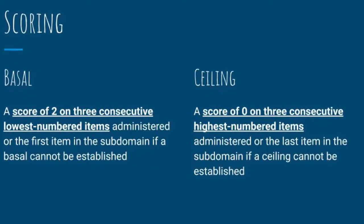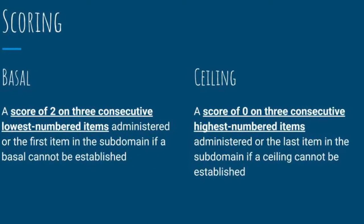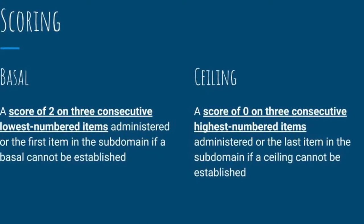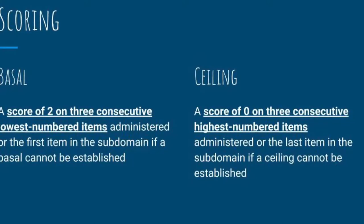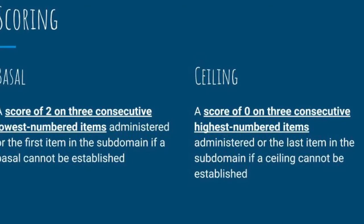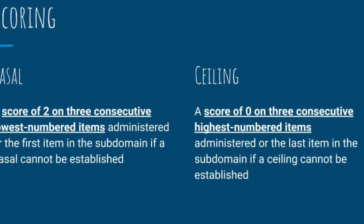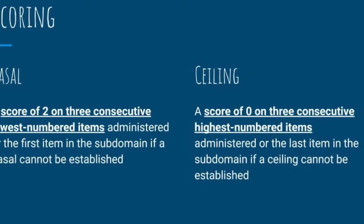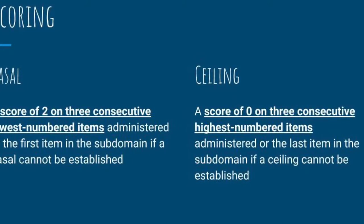In order to determine the ceiling, a score of zero on three consecutive highest numbered items administered, or the last item in the subdomain if a ceiling cannot be established.